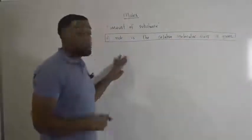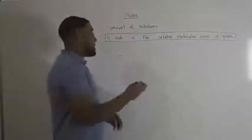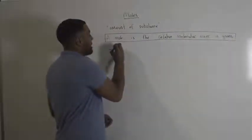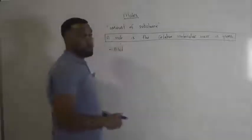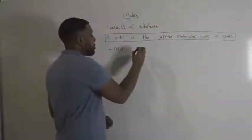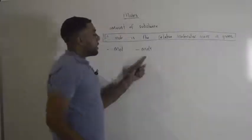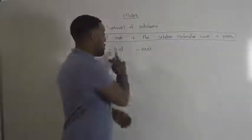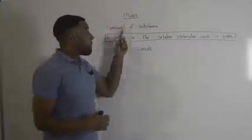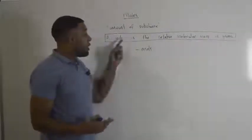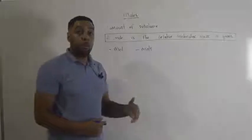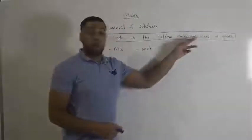Now again, in chemistry, you see the word mole and it's spelled M-O-L, mole. Or sometimes we can talk about moles, which is M-O-L-S, but they're both talking about the amount of substance or the relative formula mass or molecular mass in grams.